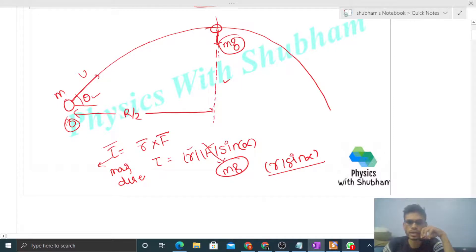This perpendicular distance is R/2, where R is the range. At the highest point, the horizontal distance traveled is half the range, so it's R/2. So r sin α is nothing but R/2.